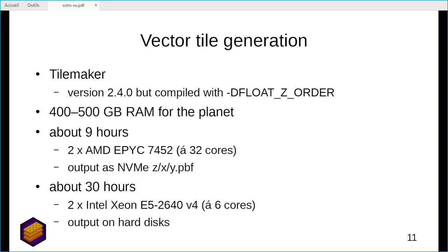For vector tile generation, we use TileMaker in its latest release, but if you want to generate Shortbread tiles you have to compile it with a special flag to enable sorting. To generate vector tiles for the whole planet, you need 400 to 500 gigabytes of RAM. It needs about nine hours on our fastest server and about 30 hours on an older one if you output the tiles to hard disks.